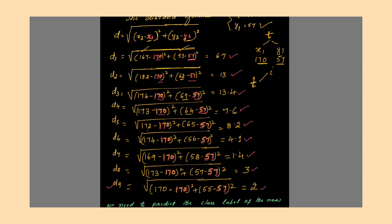Out of all these distances, you need to select the smallest values. Since K equal to 5, you select the 5 smallest by sorting in ascending order. The sorted order is: 1.4 (D7), 2 (D9), 3 (D8), 4.1 (D6), and 6.7 (D1). These are the 5 nearest neighbors.